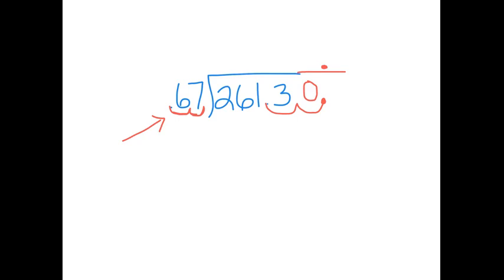Okay, so 67 can't go into 2 or 26. We need to see how many times 67 can go into 261. Okay, so I'm going to come off to the side here and do some work. I'm going to start with, oh, let's try 4 times.